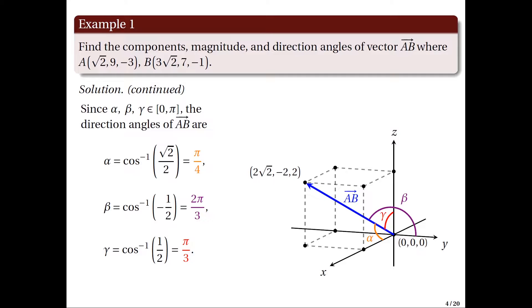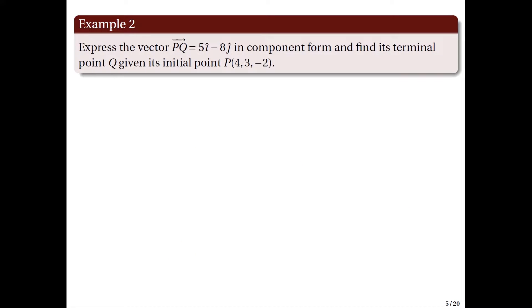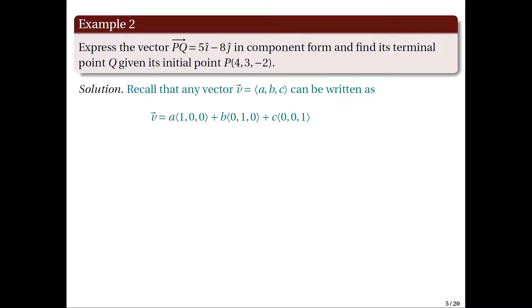The figure on the right illustrates the position representation of vector AB in three-dimensional space. Now we move on to the next example. Express the vector PQ = 5î − 8ĵ in component form and find its terminal point Q given its initial point P. Recall that any vector V with components A, B, and C can be written in terms of the standard basis vectors in R³.